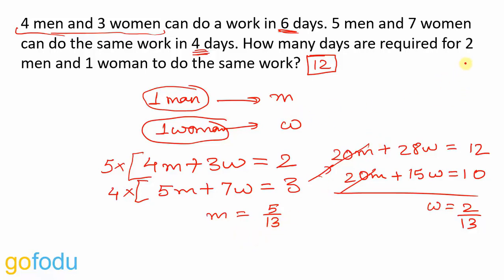Now finally two men and one woman will do the same work. So in one day they will be doing 2M plus 1W work. Put these values, this is equal to 2 into 5 by 13 plus 2 by 13 that is 12 by 13. So they are doing 12 by 13 units in one day.